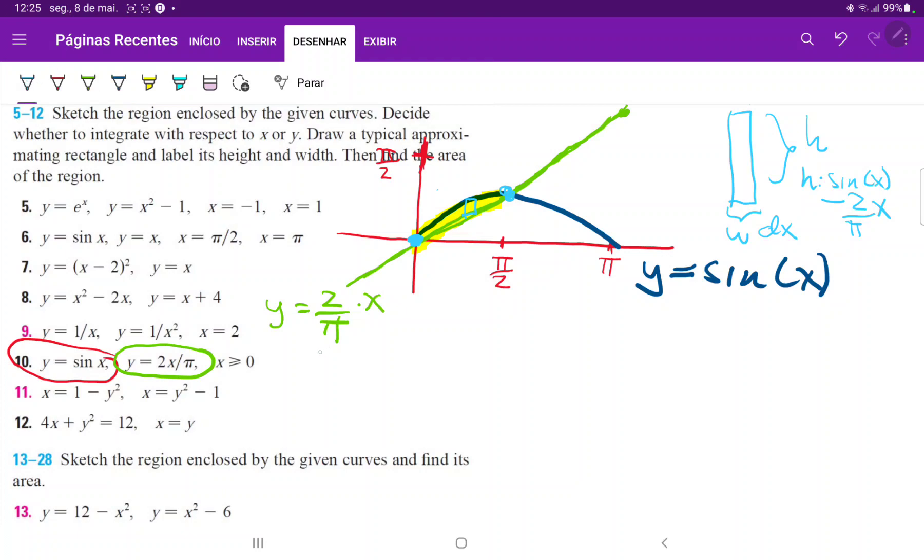So we'll set these equal to each other and see if the math checks out. Sine of x is equal to 2 over pi times x. So we'll check the point 0. Sine of 0 is just 0 equals 2 over pi times 0, which is equal to 0. So that works. This means that one of our boundaries is 0, the lower boundary.